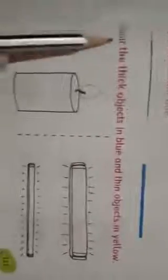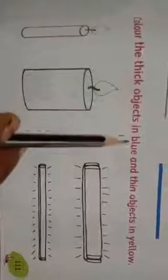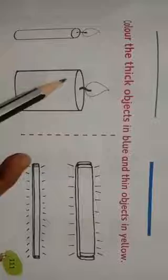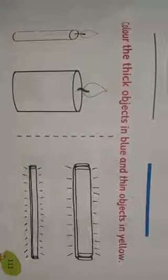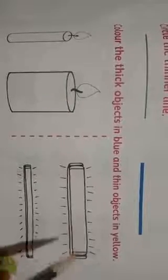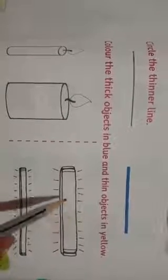Color the thick objects in blue and thin objects in yellow. So you have to color blue in the thicker object and color yellow to the thinner object.